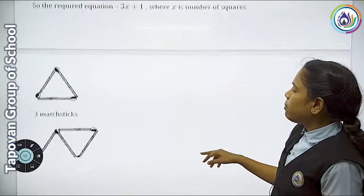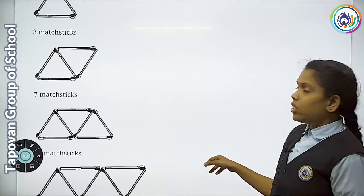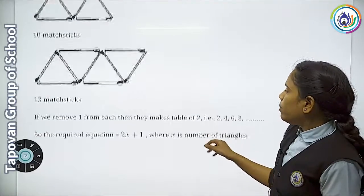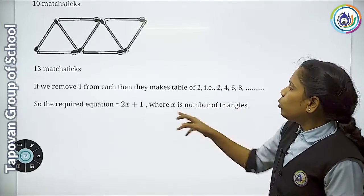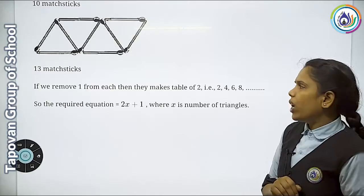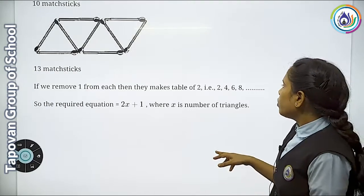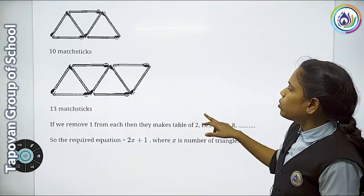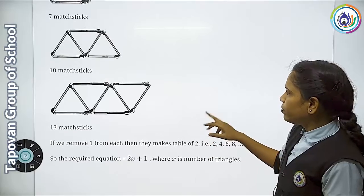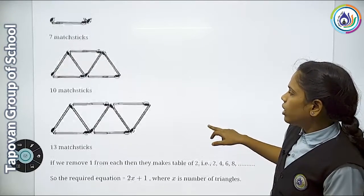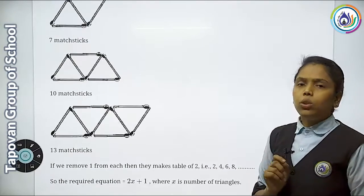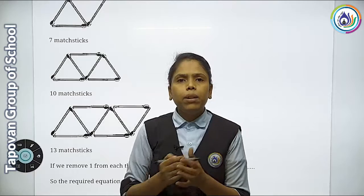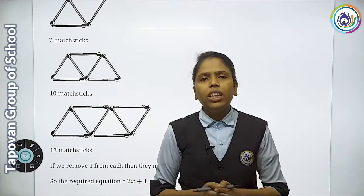For the triangle pattern, it will be similar. The formula will be 2x + 1. So using this shape, the matchstick count formula changes. That will tell you — this video will be finished here.